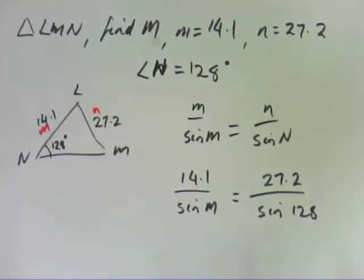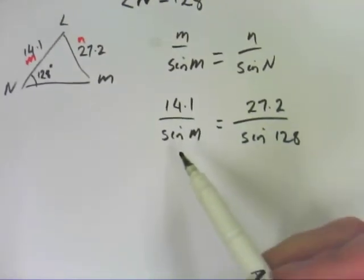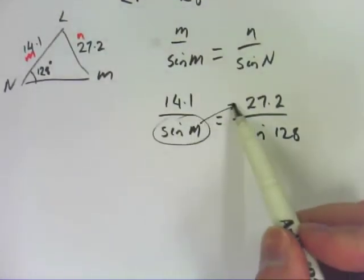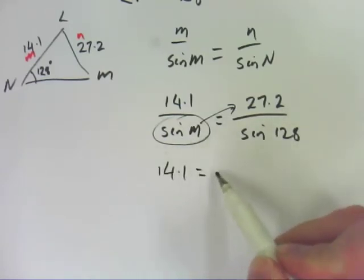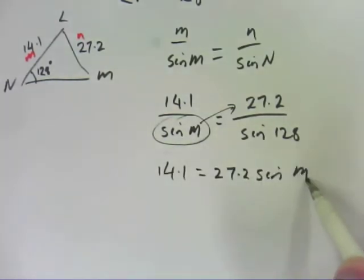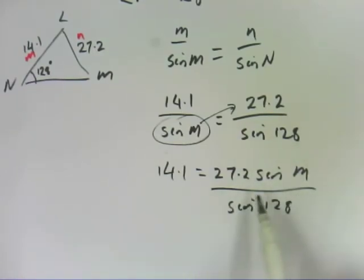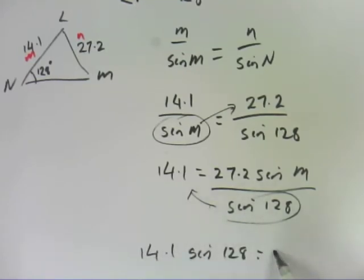So if we then do what we did last time, the first thing I'll do is I'll multiply that over there. So 14.1 equals 27.2 sine M divided by sine 128.